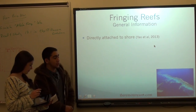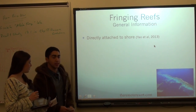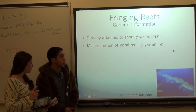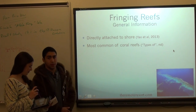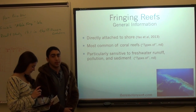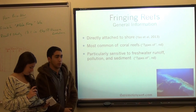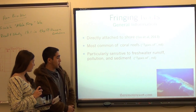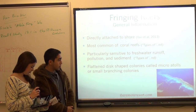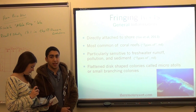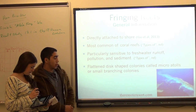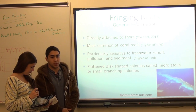Here's some general information. Fringing reefs are directly attached to the shoreline. They're the most common of the coral reefs we're going to look at. They're particularly sensitive to freshwater runoff and sediment that comes from the land. They have flat disk-shaped colonies, also known as micro-atolls, or small branching colonies.